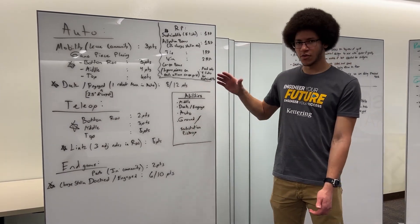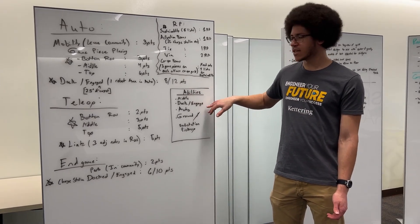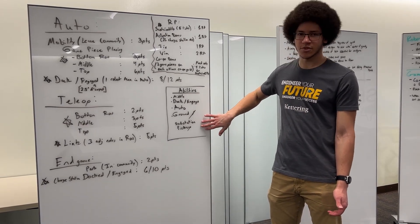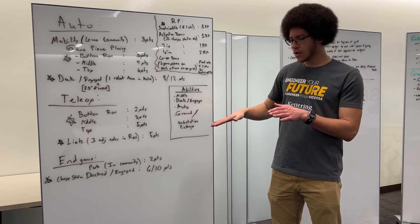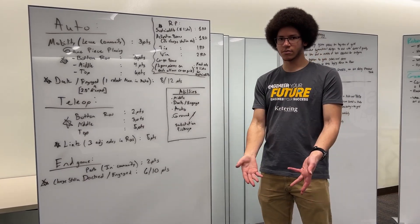So essentially as an overview, our abilities are the ability to score in the middle, we'll also dock and engage, run an autonomous routine, and grab. We're hoping to be able to grab from the ground and substation or the double substation so that we can get things from the table and then also ground pickup.